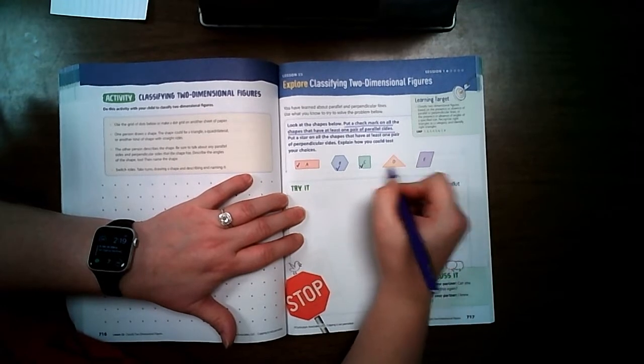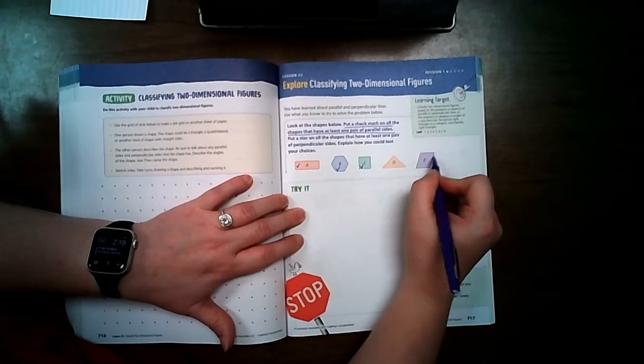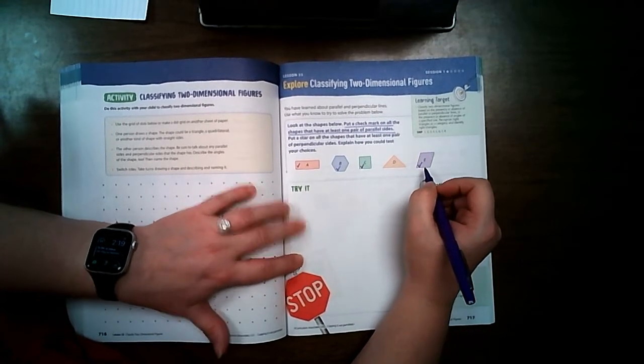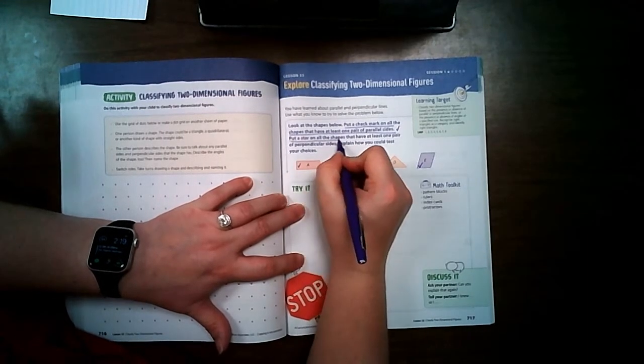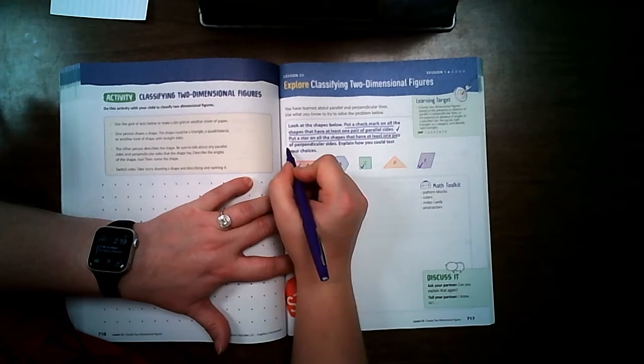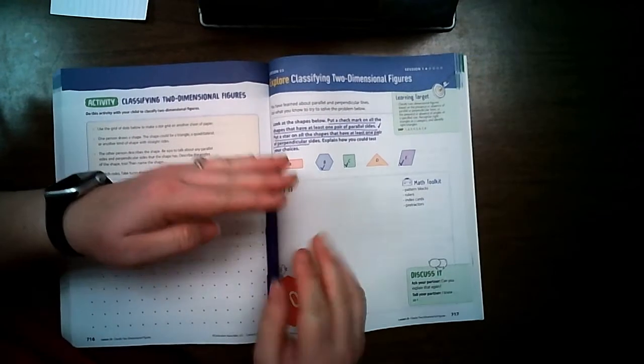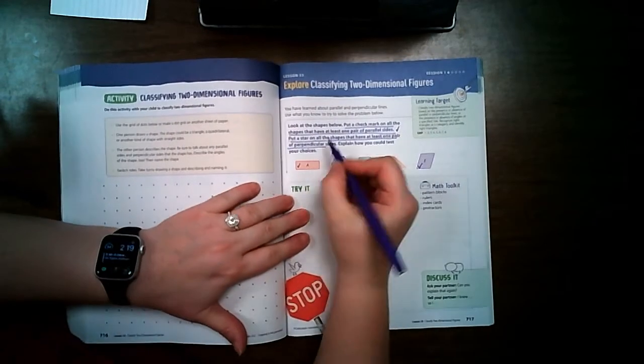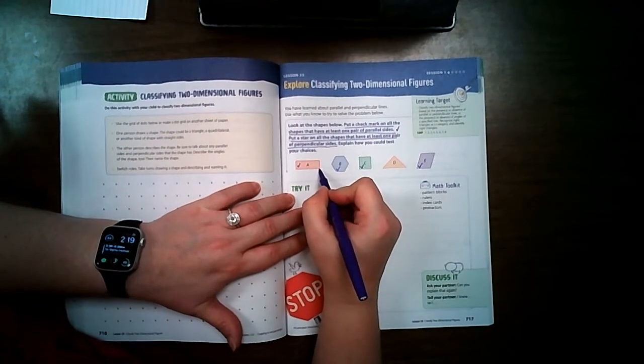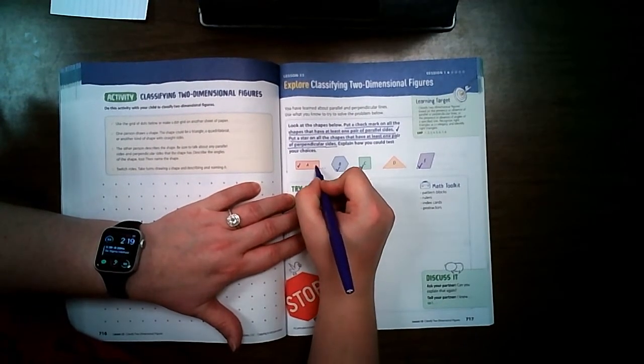Oh, a triangle doesn't. Everything crosses. But E, this one does have. Put a star on all the shapes that have at least one pair of perpendicular sides. So perpendicular is like this. It makes a cross. So these corners keep going. They do have that.